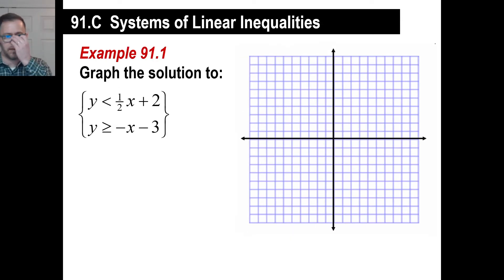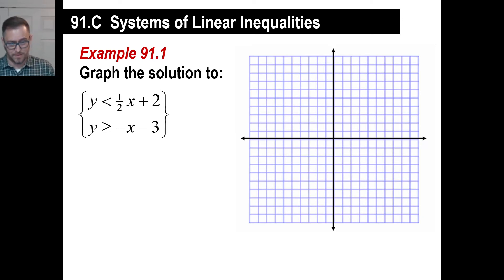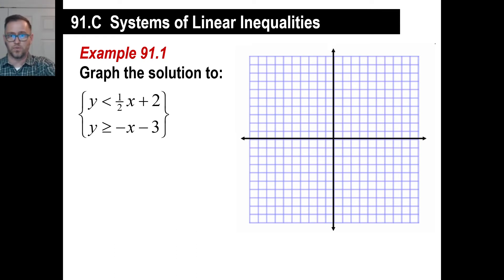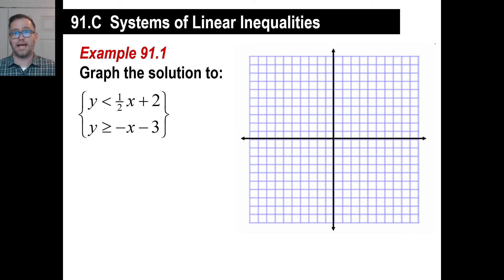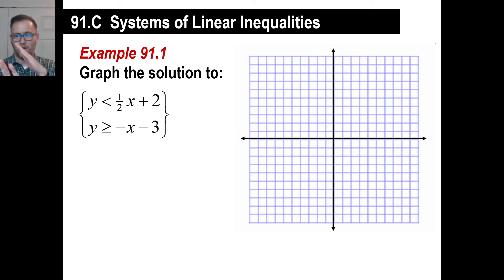Okay, what they'll do is give you something like this — go ahead and pause if you need to write this down. They say graph the solution where y is less than one expression and also greater than or equal to another. This is like a system of equations. If these were just equal signs with two lines, you'd draw two lines and find where they cross — that's your answer. Same thing here: graph both, and where they overlap, that's your answer. Your answer is going to be a drawing.